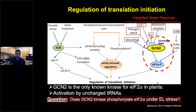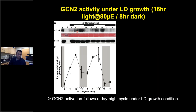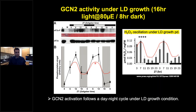We asked whether GCN2 kinase phosphorylates eIF2α under excess light stress. Checking GCN2 activity via eIF2α phospho-specific immunoblot in seedlings grown in long-day conditions (16 hour light / 8 hour dark), we see that GCN2 activity follows a day-night pattern — eIF2α phosphorylation goes up during the day and falls at night. This day-night pattern nicely mimics published hydrogen peroxide oscillations, where H₂O₂ levels also increase during the day and fall at night.